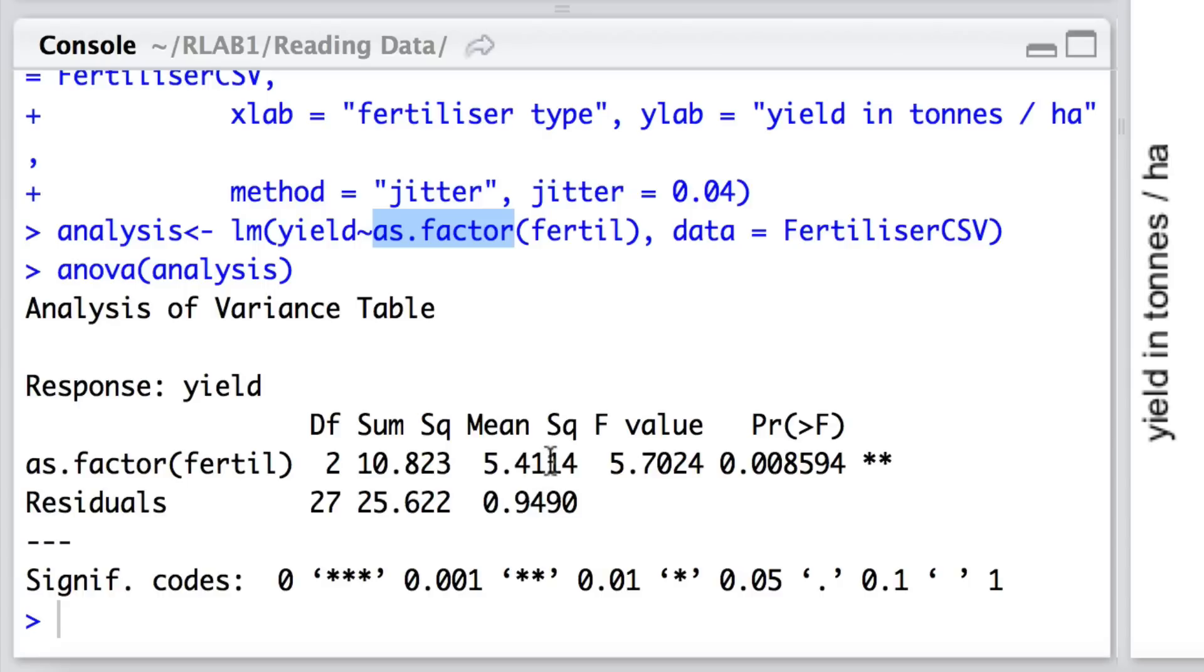Two estimates of the population variance: one judged from the variability between the fertilizers, and the other generated by an estimate of the variability within the fertilizers. These two happen to be highly significantly different according to the F distribution, in that the probability of us getting that test statistic of 5.7 or a more extreme, if the null hypothesis was true, is really very, very small. So we reject the null hypothesis that the population means are all equal.